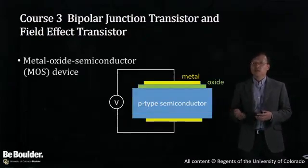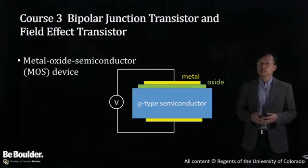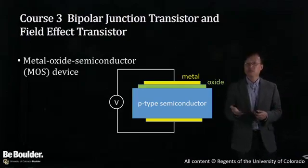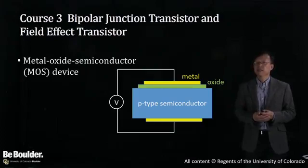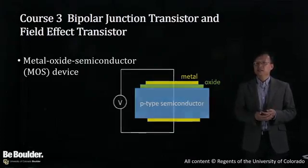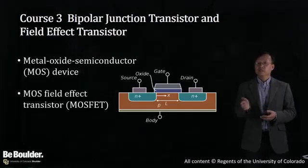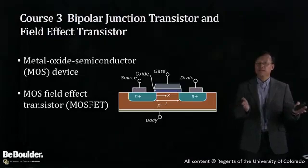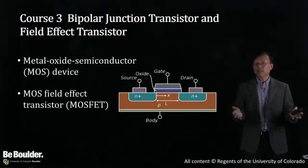Next, our course on transistors will discuss two types of transistors: bipolar junction transistor and the field effect transistor. First, we start with metal oxide semiconductor devices and how they behave under various biasing conditions. Then we discuss field effect transistors using the MOS device as their gate, as shown here. This MOSFET is now a mainstream technology in integrated circuit technologies.